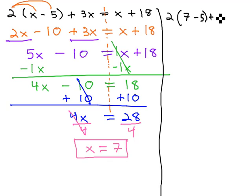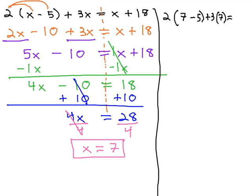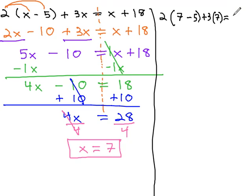So let's write 7 minus 5 plus 3x, which we said was 7, equals—run out of space here—x plus 18, or 7 plus 18.